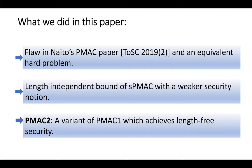This is the list of what we have done in this paper. First of all, we have identified a flaw in Naito's paper which he submitted and which was accepted in ToSC in 2019. He proposed a construction of a variant of PMAC and we identified a flaw in the security proof of the construction. We also posed an equivalent problem which is to be solved in order to resolve the claim in the paper.